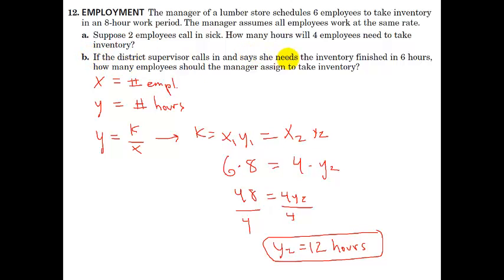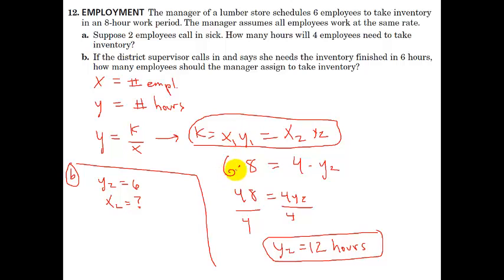Second thing, if the district supervisor calls in and says she needs the inventory finished in six hours, how many employees should we assign? So, now let's look at part b here. So, for part b, we have that six hours is the y value. So, we know that y2 has to be six. And we're not sure what x2 is supposed to be. So, we use the same shortcut here. On this side, we know it's six times eight, which is 48. On this side, now, we don't know x2. So, we'll put x2 here. And we do know that this is six, though. So, we divide both sides by six. Divide by six. And x2, 48 divided by six is eight employees. So, if it takes six employees eight hours, then it would take eight employees only six hours. So, that kind of variation is true for inverse variation. One goes up, the other goes down.